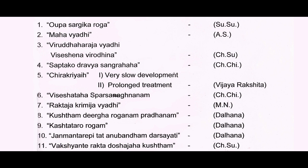The causative factors for Kusta, for the manifestation of Kusta, are about seven — this is from Charakasarastrathasthana. This is Charakriya, which indicates this is very slow in development and requires a prolonged line of treatment. Visayasena Spharsaghananam — generally in Kusta, you have an anesthetic patch. This is a very good condition described by Charakasarasthathasthana.